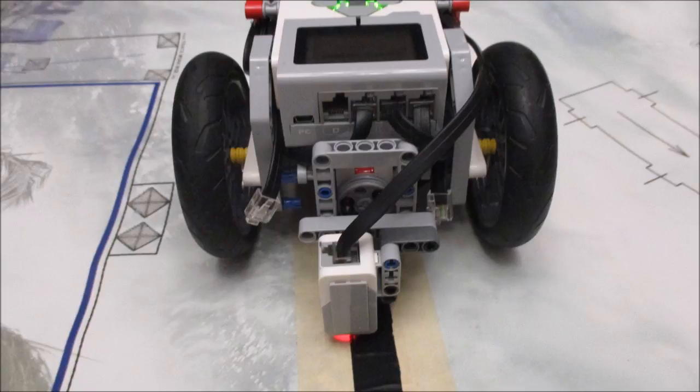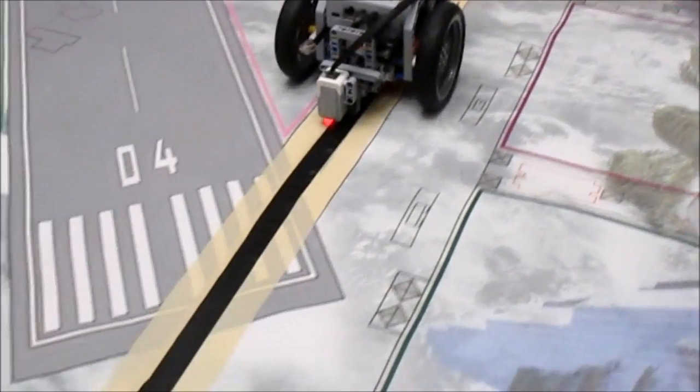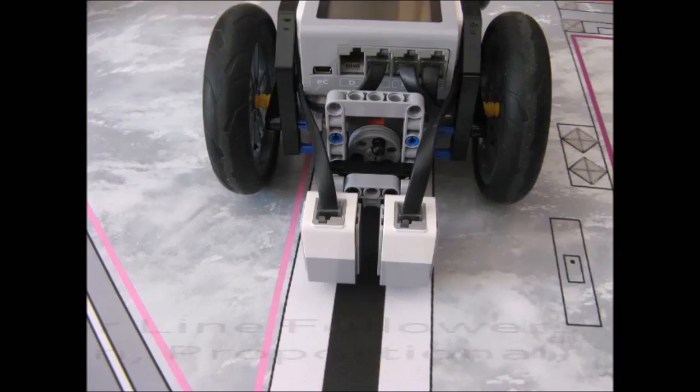So it may help to put your sensor slightly offset so that the rest of your robot will be directly over the line when it actually follows. Other than that, all the rules about sensor height and distance from the wheels apply.